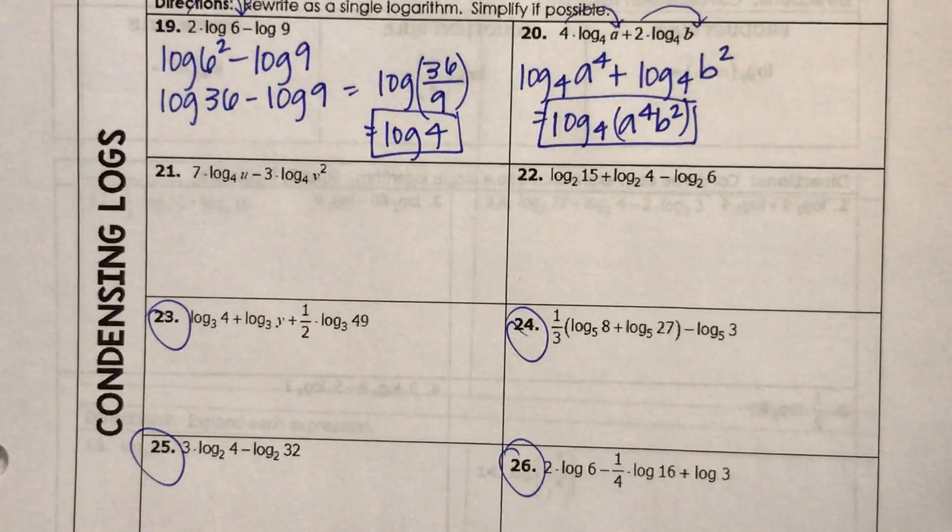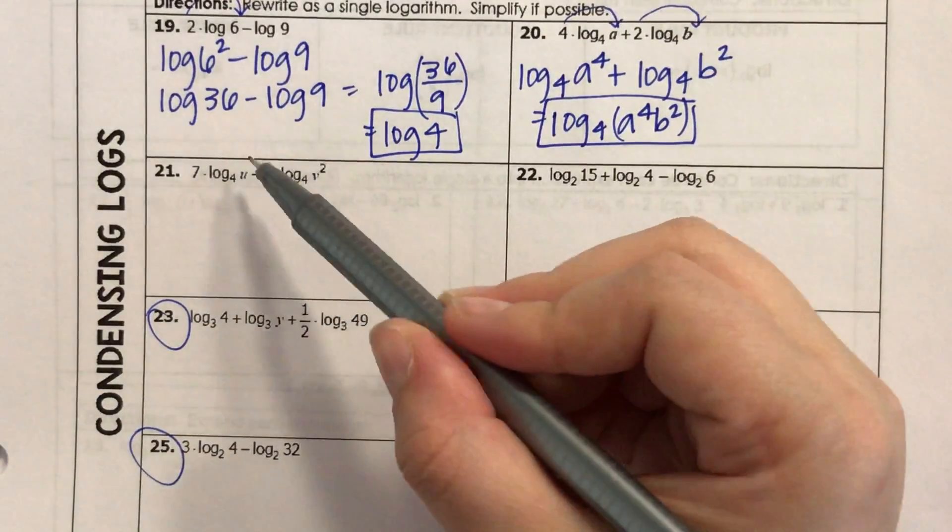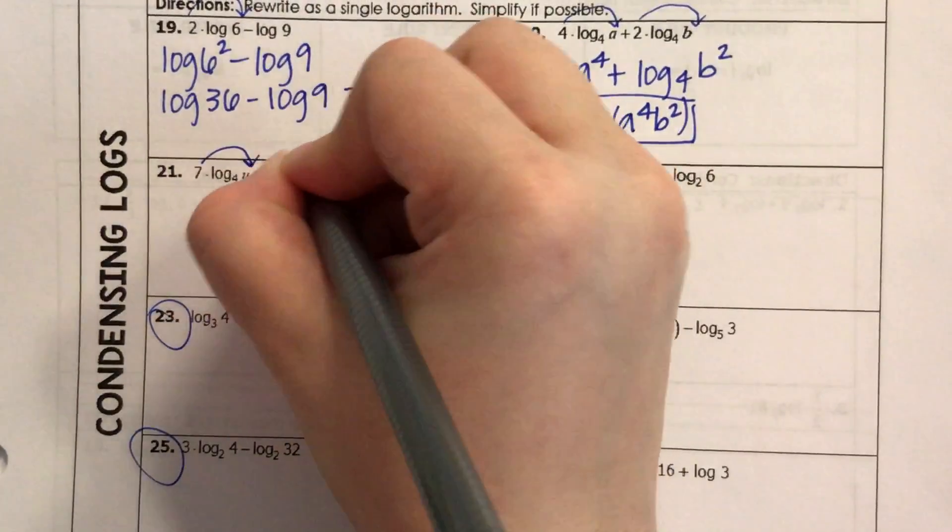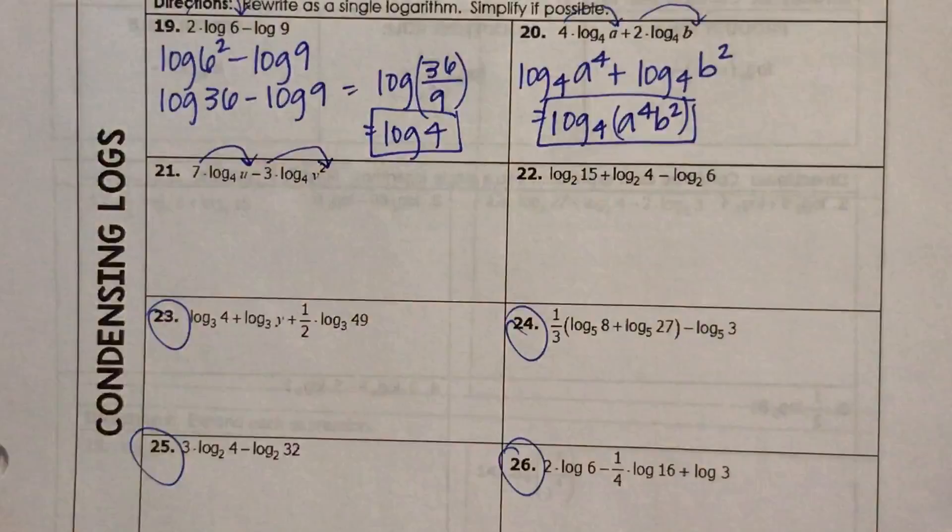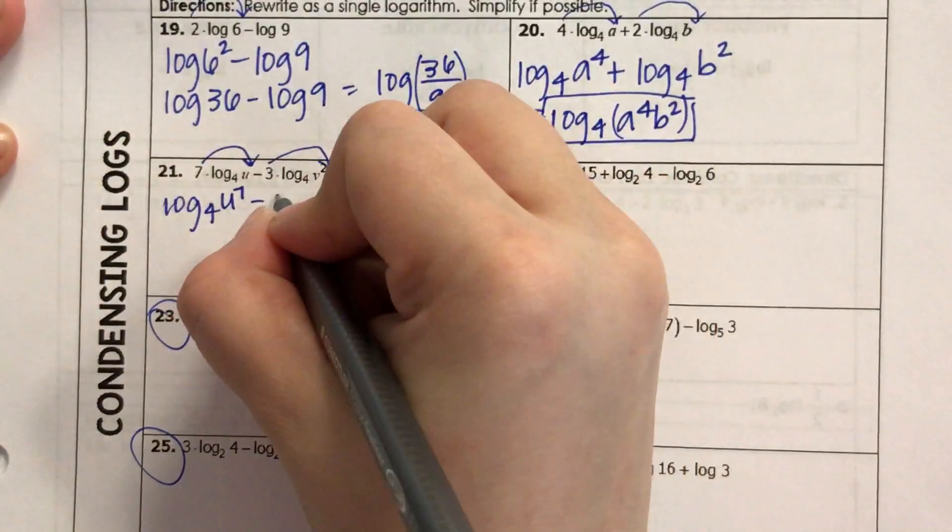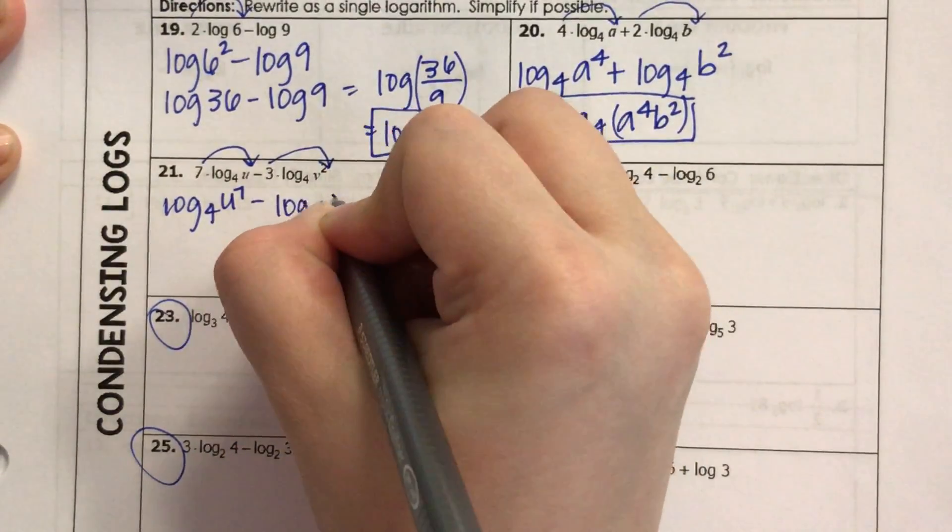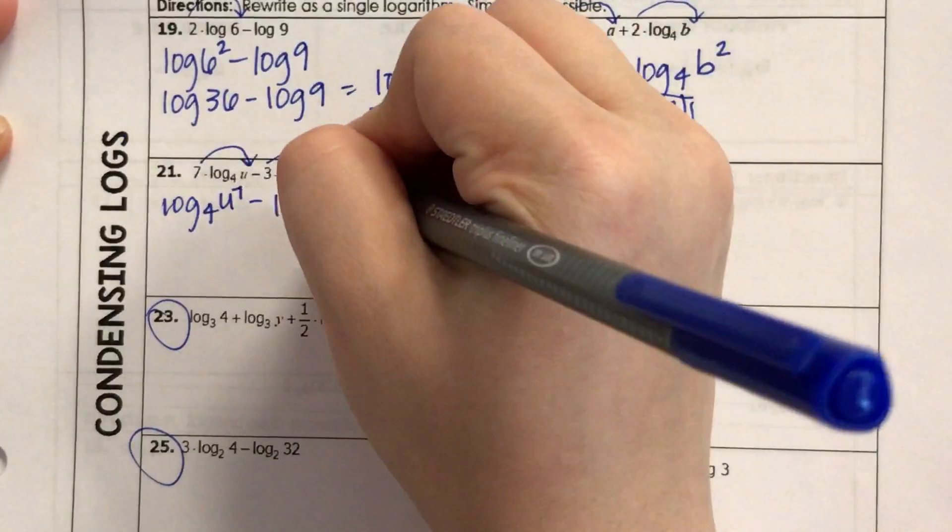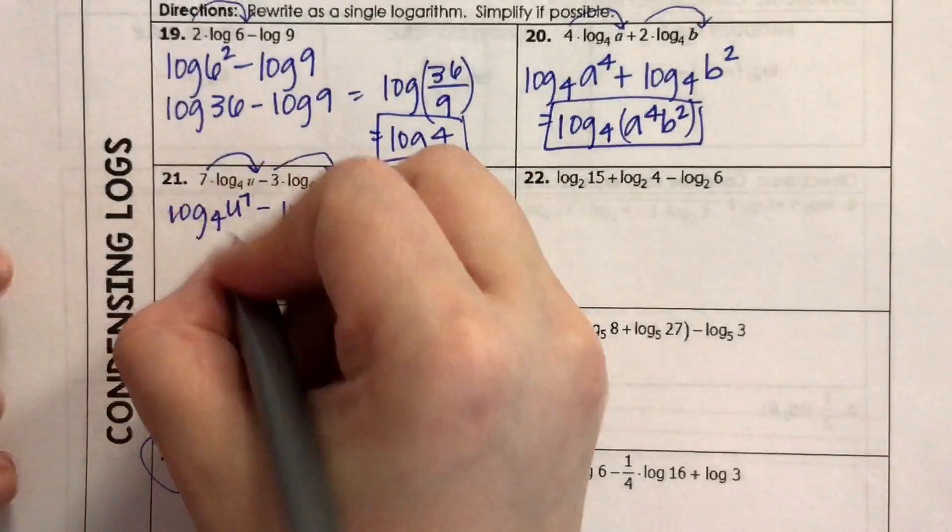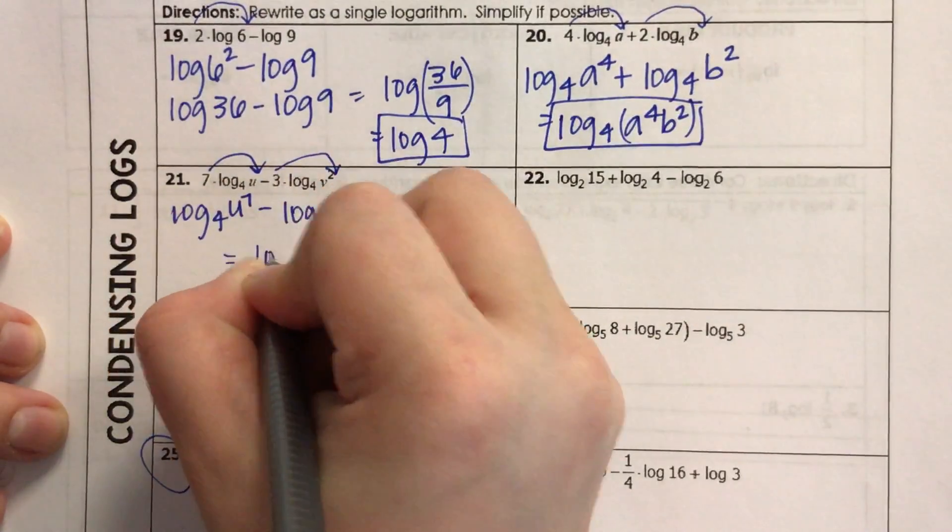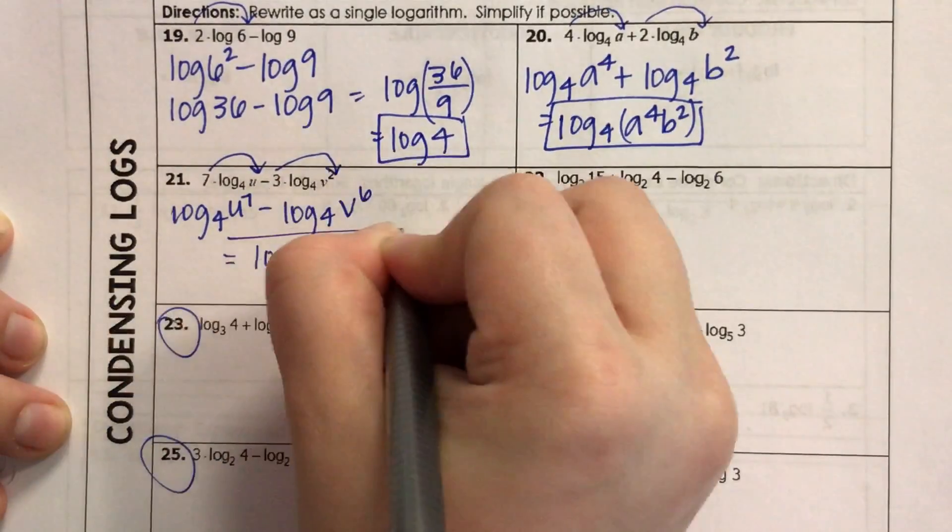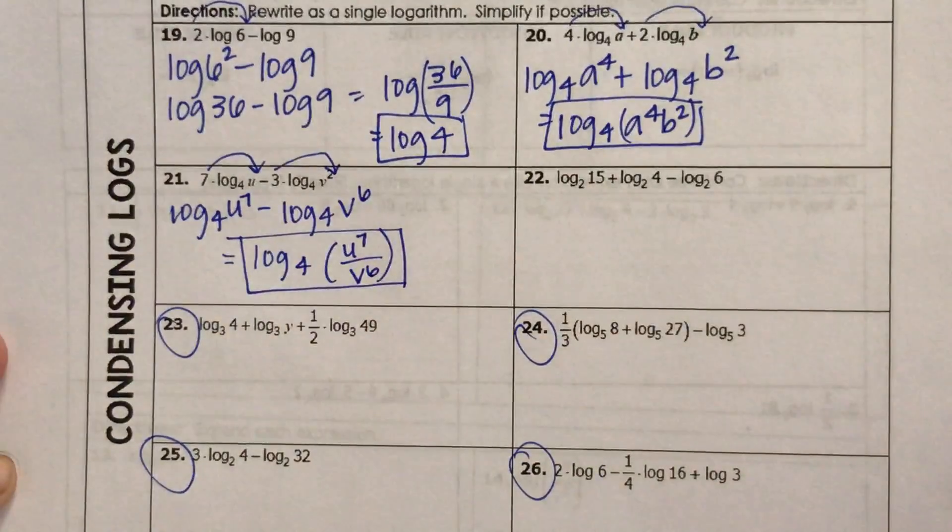Okay, 7 times log base 4 of U minus 3 times log base 4 of B squared. So this comes over here, this comes over here: log base 4 of U to the seventh minus log base 4 of B. This now becomes 3 times 2, so to the sixth power. And then this is a subtraction, so I know I can make it a quotient. So this is really log base 4 of U to the seventh over B to the sixth.